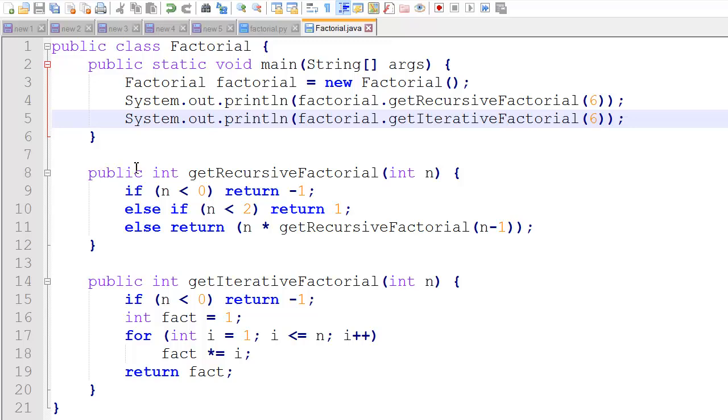And then we have two methods. We have the get recursive factorial, which receives an integer n, and it also returns an integer. First it does a quick error check. If n is less than 0, in other words, n is a negative number, we don't know how to handle that. We don't know how to compute the factorial for a negative number, so we're just going to return a negative 1. And if n is less than 2, that's our base case. We test for our base case, and if n is 0 or 1, we return 1.